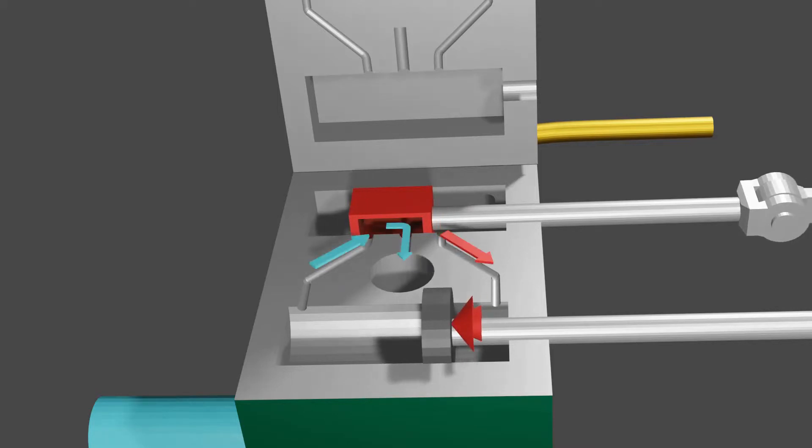The sliding valve has started to move the other way. Now the right side of the cylinder is connected to the steam chest and the left side is connected to the exhaust.